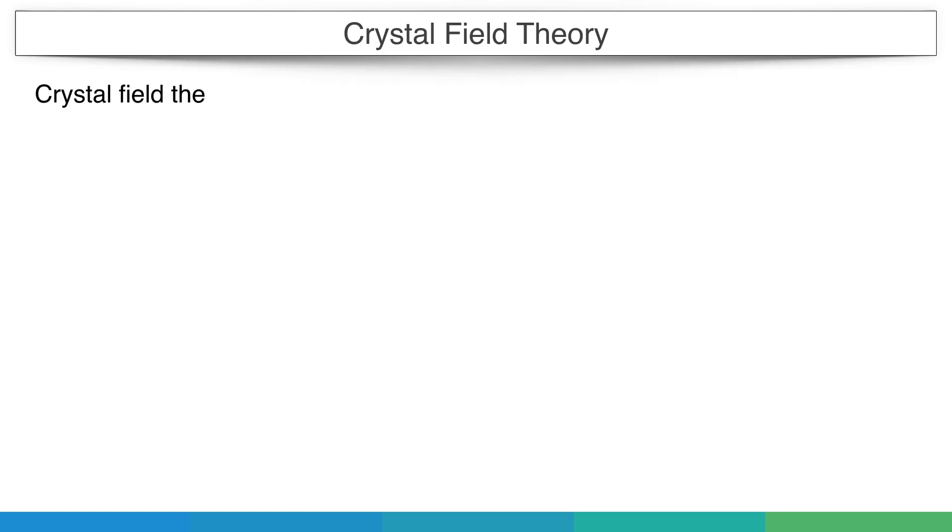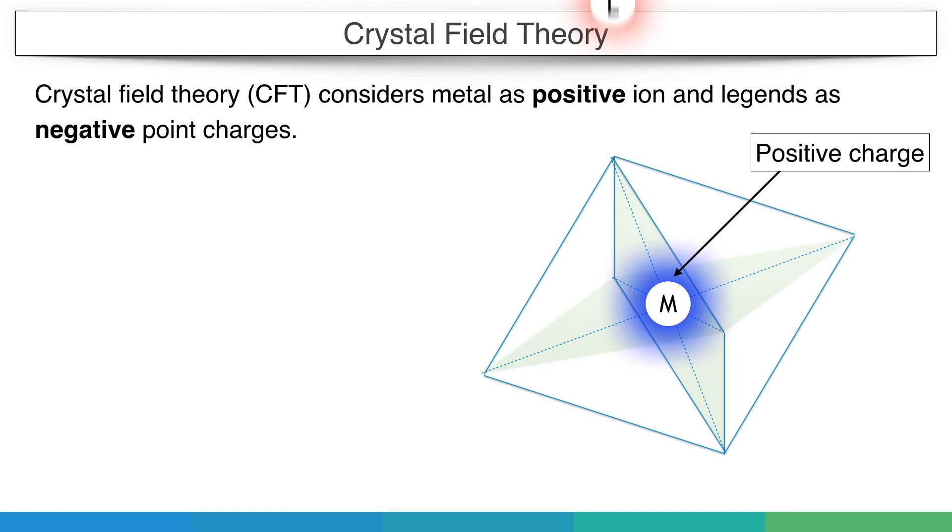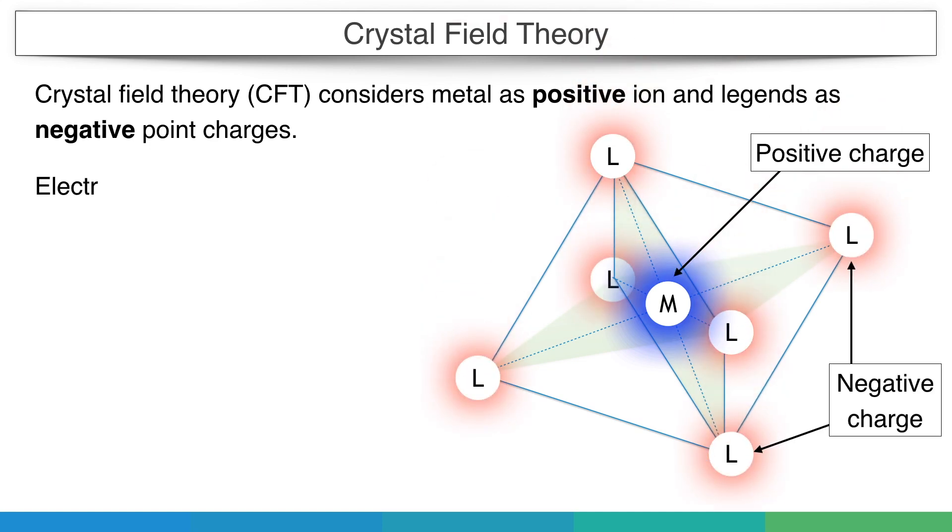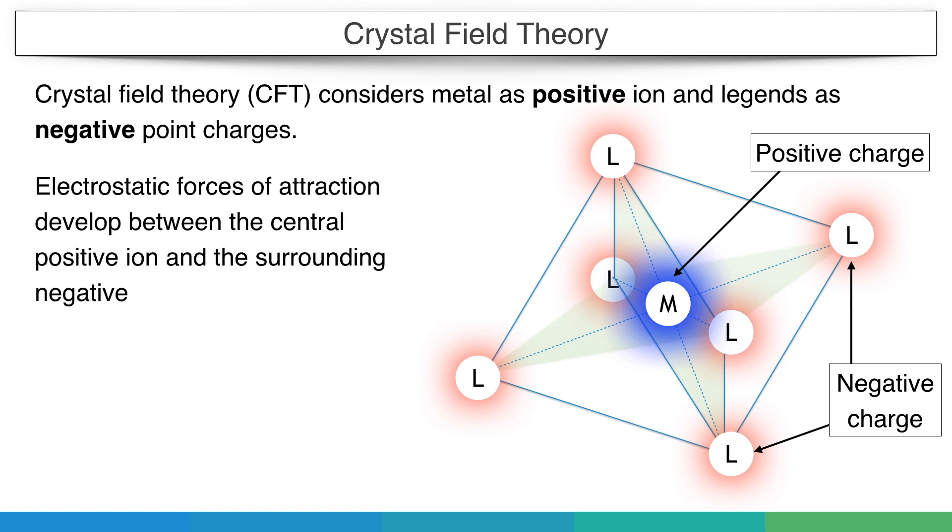Crystal Field Theory considers metals as positive ions and ligands as negative point charges. Electrostatic forces of attraction develop between the central positive ion and the surrounding negative ligands.